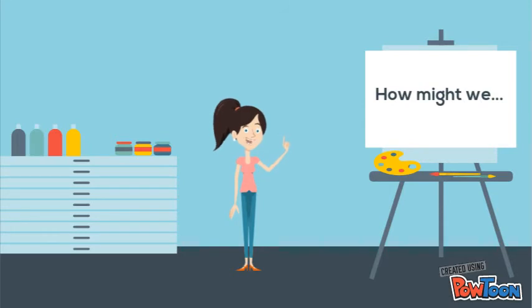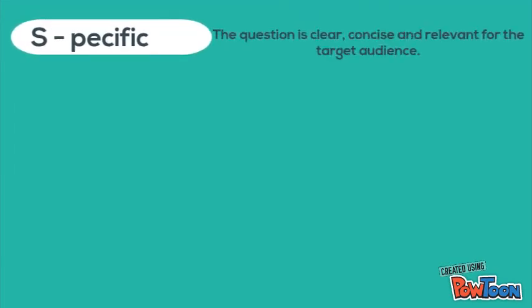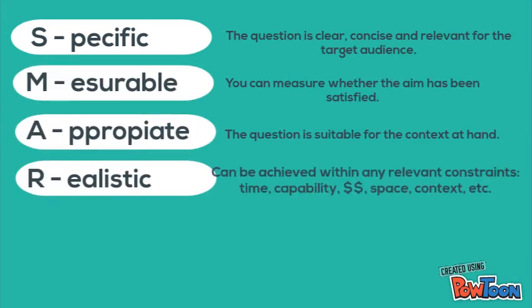So how do you know if your how might we question is the right question? One way to check is to make sure it's SMART, and by SMART I mean it should be specific, measurable, appropriate, realistic, and time bound.